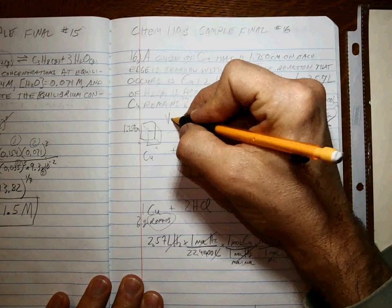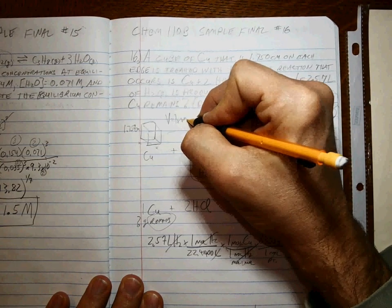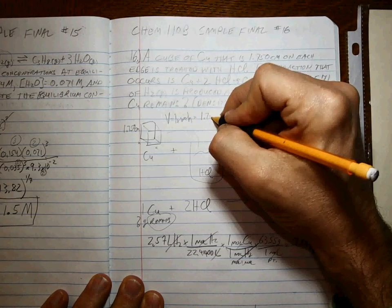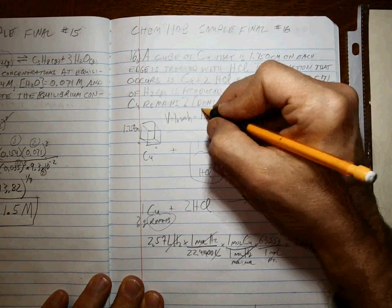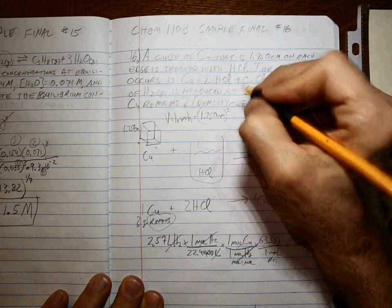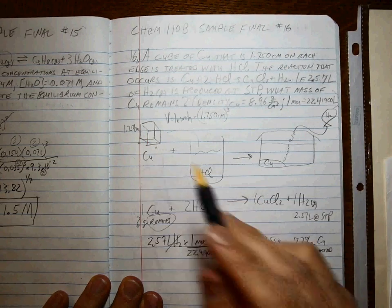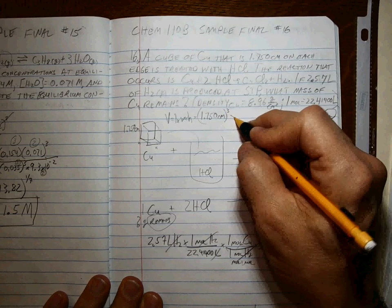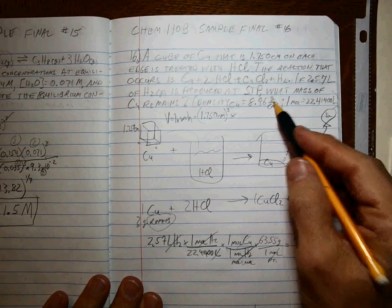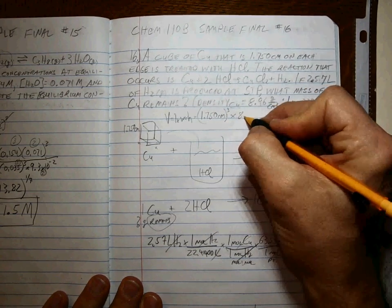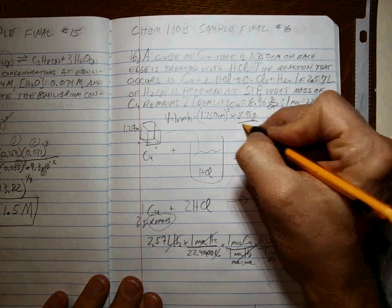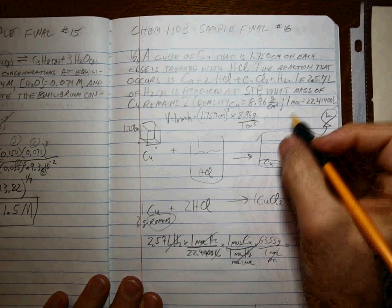Up here. Remember, volume is equal to length times width times height. So 1.750 centimeters cubed, because it's the same length, width, and height.